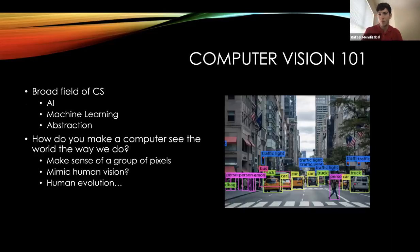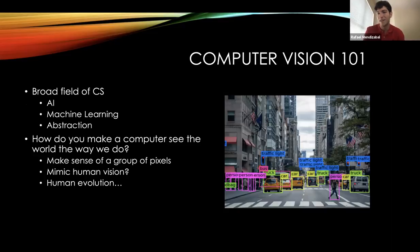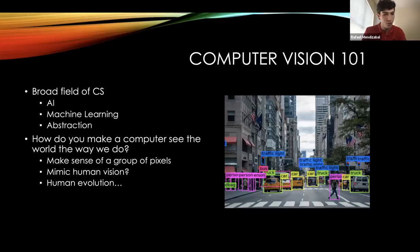So, welcome to Computer Vision 101. Computer vision is a very broad field of computer science. As I kept researching this, I thought I knew all about it, and then I found it's got more and more and more. But I think that's really cool — you got AI involved, you got machine learning, you got abstraction, and even more concepts than those.